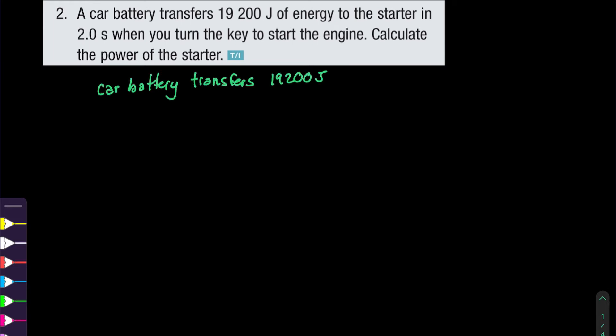Let's write down what we're given in this question. We have an energy transfer of 19,200 joules. The transfer of energy, which we call delta E, is our definition of work. So the work — the change in energy delta E — is 19,200 J. The two seconds is the time interval delta T, and we need to calculate the power.